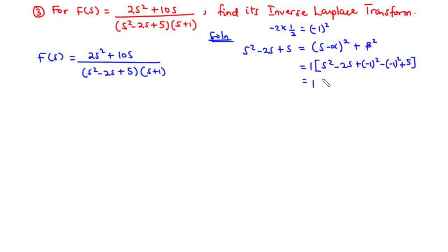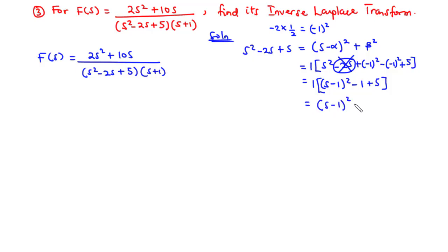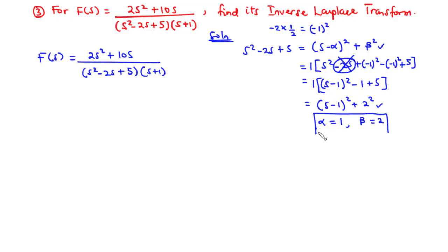Completing the square gives (s - 1)² minus 1 plus 5, which simplifies to (s - 1)² + 4. Since 4 = 2², this can be written as (s - 1)² + 2². Comparing this to (s - α)² + β², we identify α = 1 and β = 2. So we have successfully completed the square.